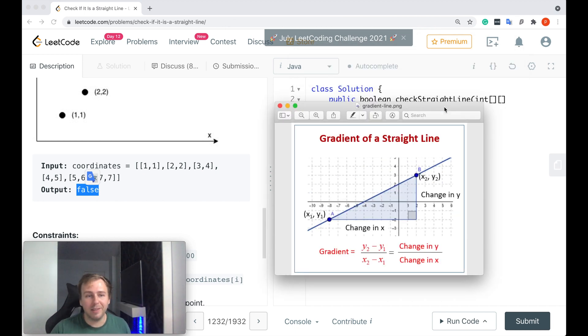Basically we can use the gradient. The gradient is the measure of the steepness of a straight line. So if we calculate the gradient for the first two points and then we go through the rest of the points and check the gradient for all the other points as well - if the gradient is the same all the time, it means it's definitely a straight line. If the gradient for some other points is not the same, it means it's not a straight line and we would return false.